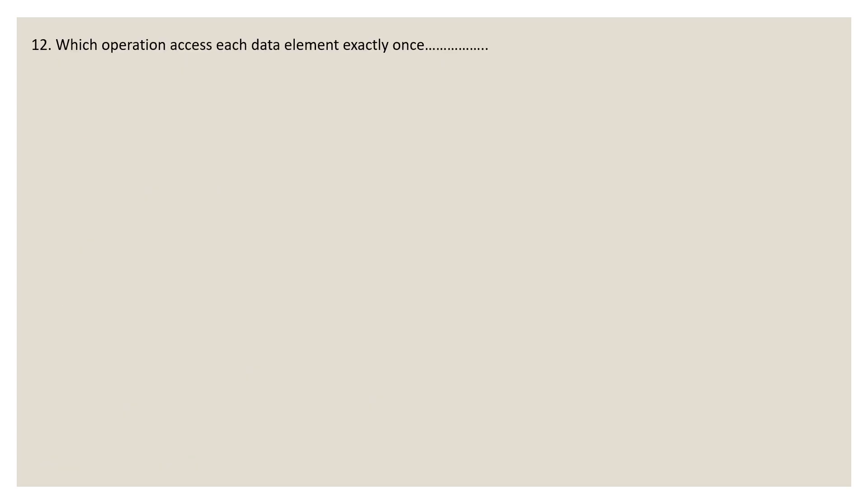Question 12: which operation accesses each data element exactly once? Options: traversal, insertion, searching, sorting. The correct answer is traversal, because traversal is the process of accessing each data item exactly once to perform some operation.